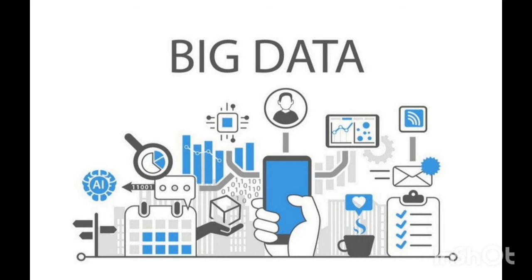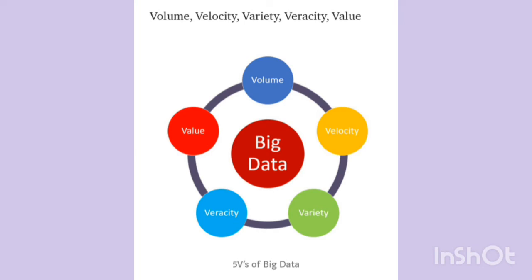I hope you all have understood what is big data. In different fields, depending on the field, different types of data in different manners are considered as big data. Now, how do you classify any data as big data? We are going to classify big data using 5 different keywords: volume of big data, velocity of big data, variety of big data, veracity of big data, and value of big data.